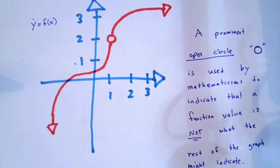When we see a prominent open circle somewhere on the graph of a function, it's used to indicate that the function value is not what the rest of the graph might indicate. So what we're trying to do here is draw attention to something that you really need to be careful about.